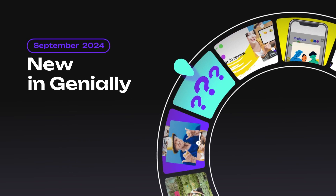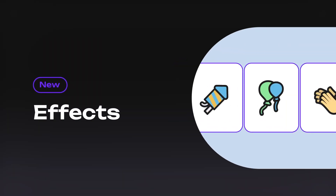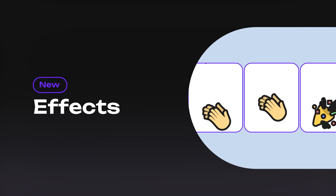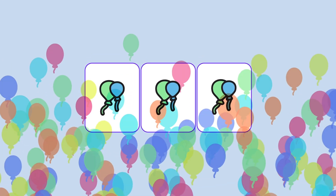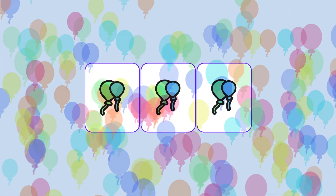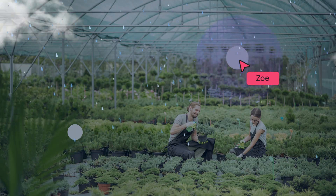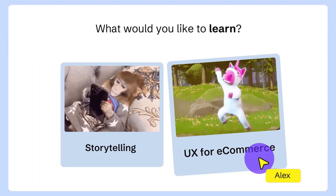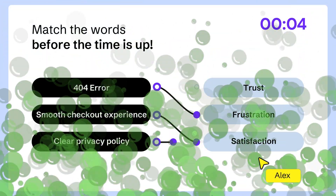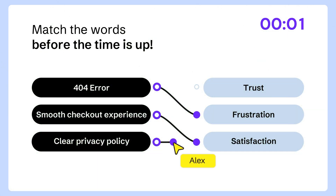So, you want to know what's new in Genially? Here, let me show you. Have you ever wished you could throw confetti or release balloons? Well, now you can. Trigger an effect at the touch of a button, when changing pages, or when a countdown timer finishes.